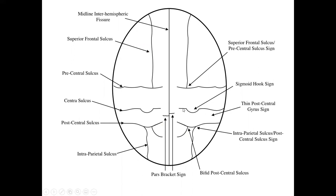At the 4 o'clock position is the central sulcus, identified by the hook sign or omega sign. From 5 to 6 o'clock is the postcentral sulcus, and the intraparietal sulcus goes downwards. The area between the precentral sulcus and the central sulcus is thicker compared to the posterior central areas.